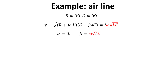Let's consider the simple case of an air line, and assume that the line resistance and conductance R and G are negligible compared to the impedance of the inductive and capacitive components. In this case, the propagation constant gamma would reduce to a purely imaginary number defined only by the line parameters L and C and the angular frequency omega. The attenuation factor alpha is zero.